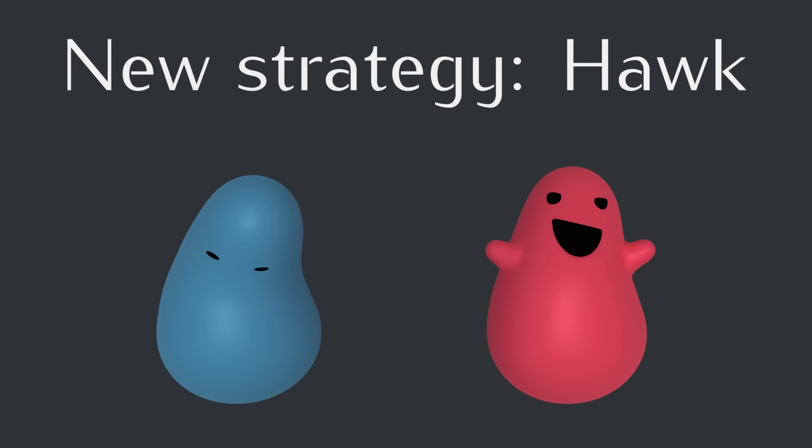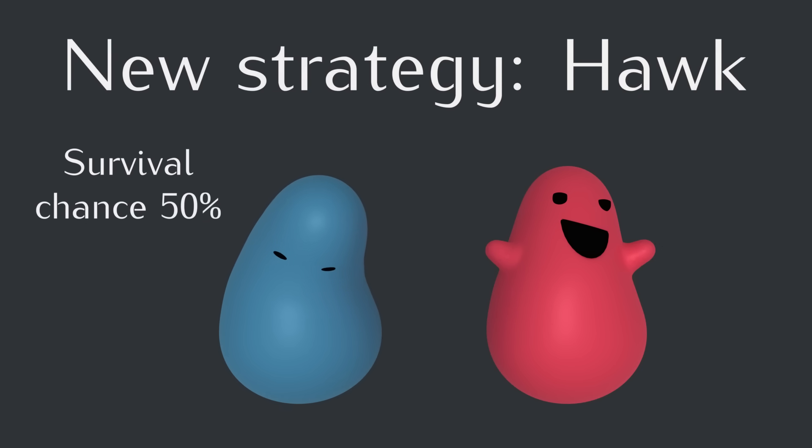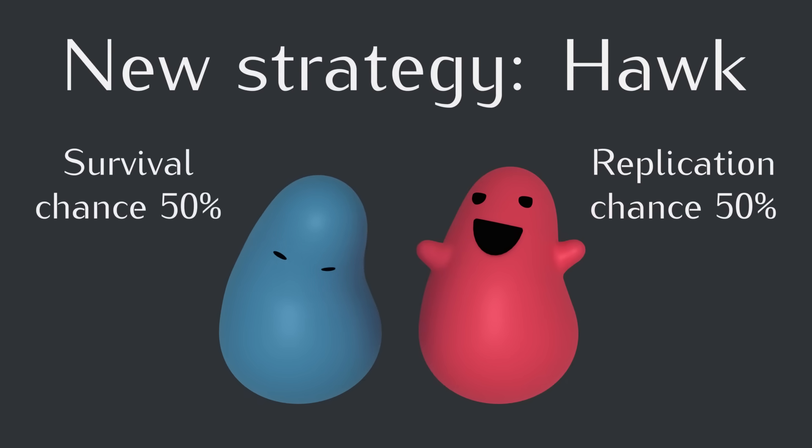This half food does complicate our survival and reproduction rules a little bit. So in this situation, a dove ends the day with half a food, so it'll have a 50% chance of surviving to the next day. And the hawk ends its day with one and a half food, so it'll survive for sure and also have a 50% chance of reproducing.